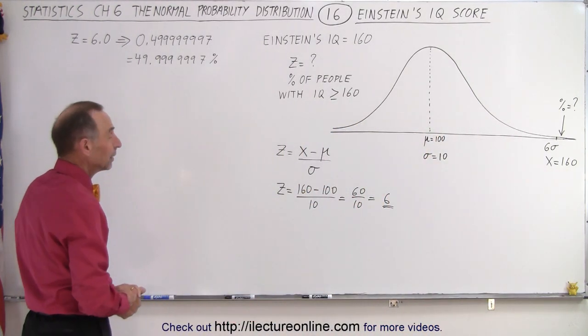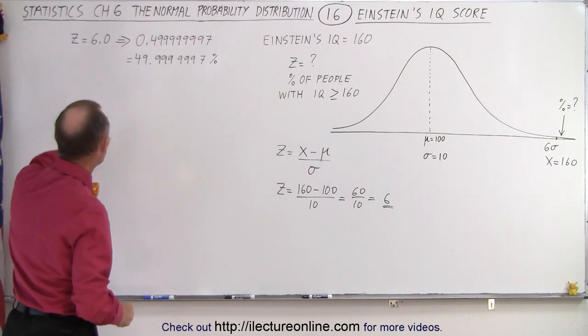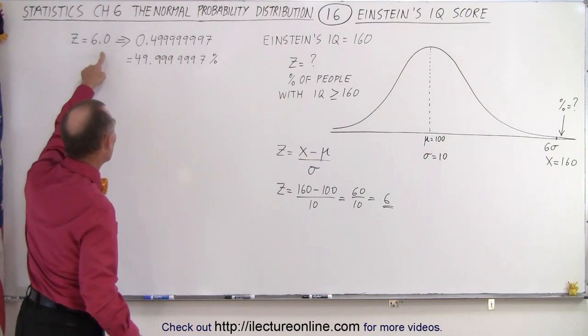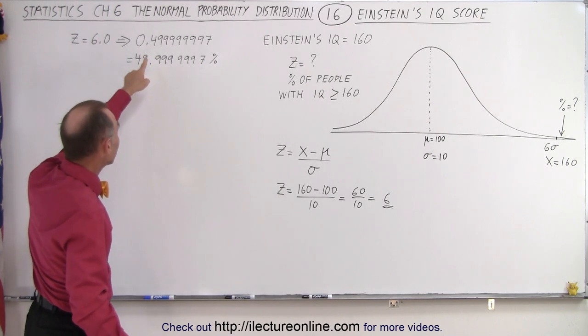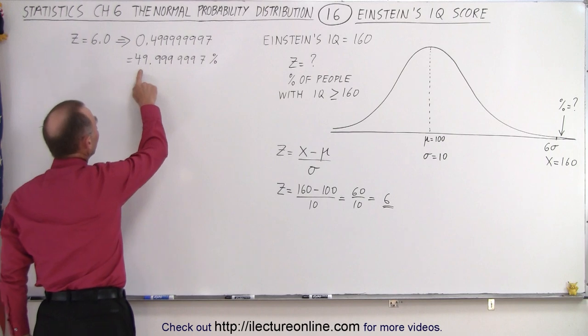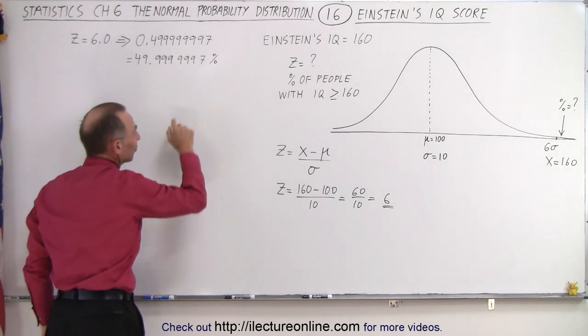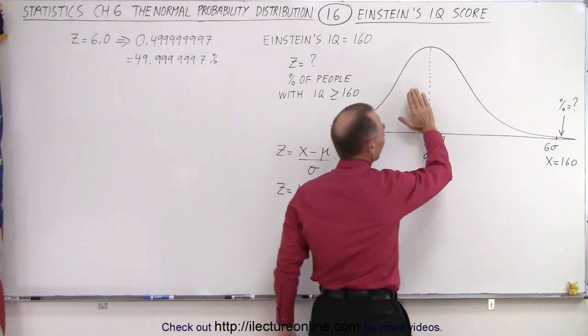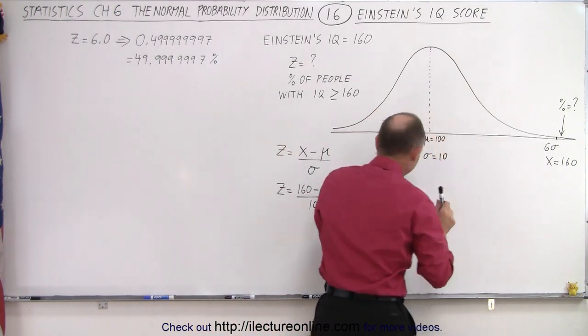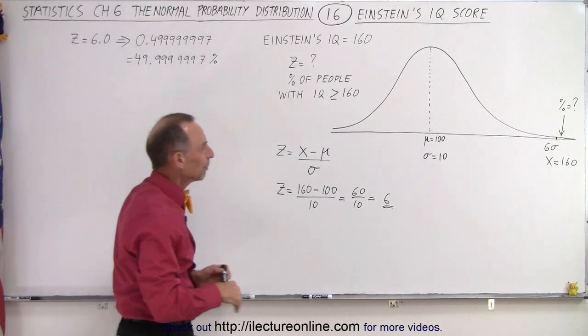All right, now, I had to go look up in the table, and my table didn't quite give me all the way up to Z equals 6.0. But I kind of extrapolated, it should be equal to about that number. In other words, you're above 49.9999997% away from 50%. Well, let me rephrase that, because that's kind of a hard thing to imagine here.